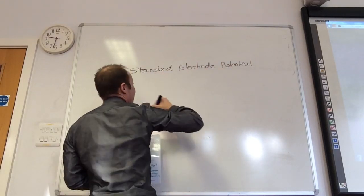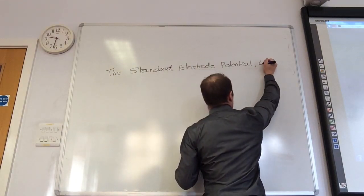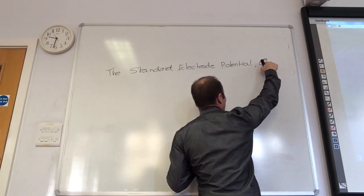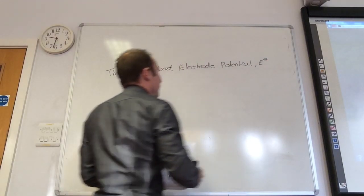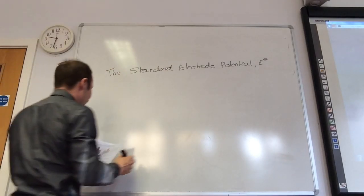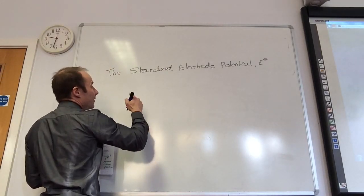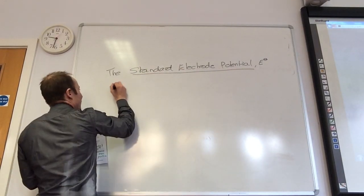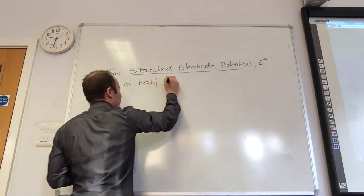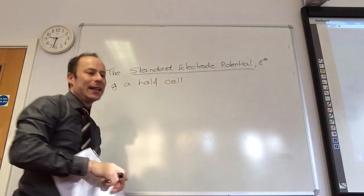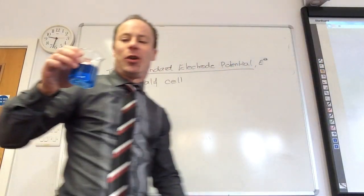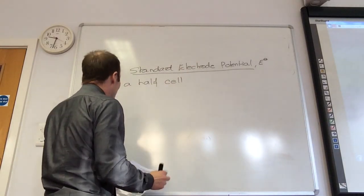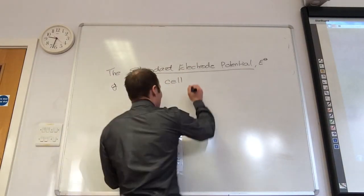Standard electrode potential - really important that you know this definition. It's given the symbol E with the little superscript circle. So the standard electrode potential of a half cell - remember we said this was a half cell, this little bit of copper in the copper salt solution.